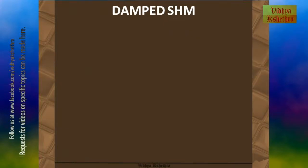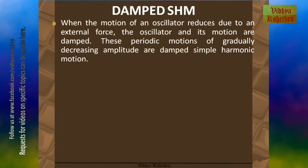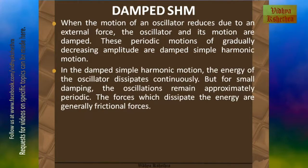Now, damped simple harmonic motion. When the motion of an oscillator reduces due to an external force, the oscillator and its motion are said to be damped. These periodic motions of gradually decreasing amplitude are called damped simple harmonic motion. For example, if we push a simple pendulum into oscillation, it will come to rest after some time due to dissipative actions and friction with air. In damped simple harmonic motion, the energy of the oscillator dissipates continuously, but for small damping the oscillations remain approximately periodic. The forces that dissipate energy are generally frictional forces.